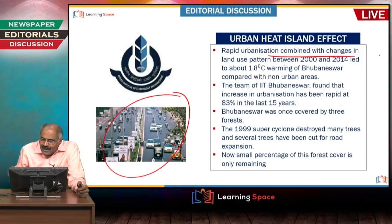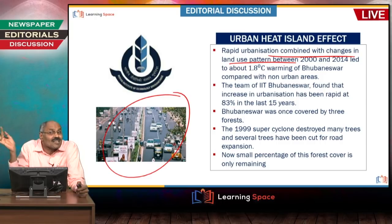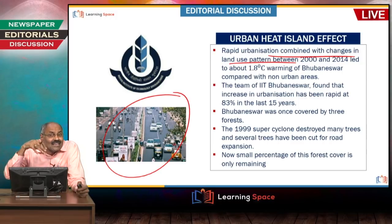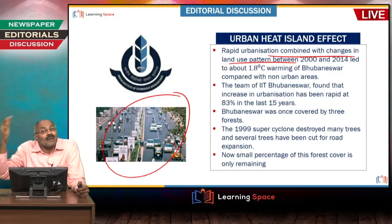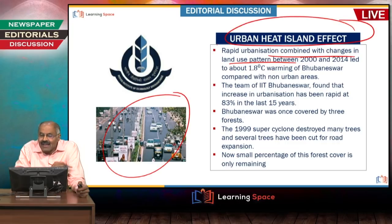Rapid urbanization with changes in the land use pattern — because of these reasons, forests have gone, green cover has gone, vegetation has gone. In Bhuvaneshwar, during the past 14 years, the temperature within the urban area has increased by 1.8 degrees centigrade in comparison to other places. In comparison to non-urban areas, this temperature increase in urban areas is known as the urban heat island effect.